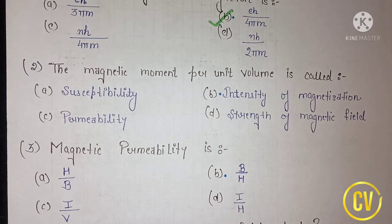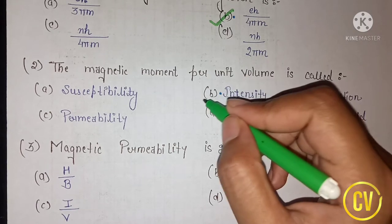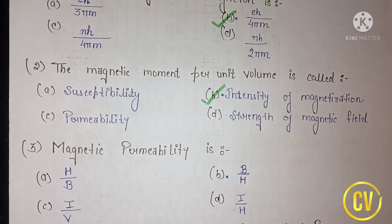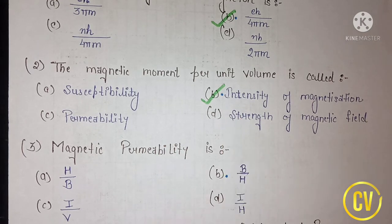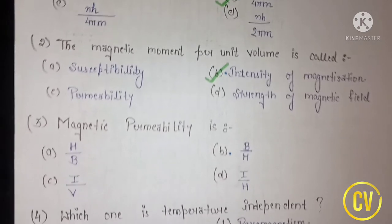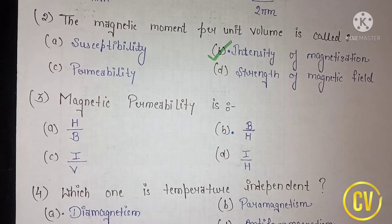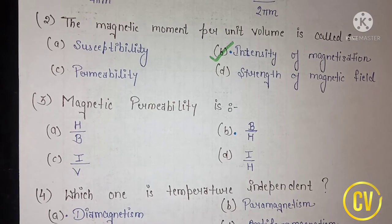The next question is: the magnetic moment per unit volume is called what? The answer is intensity of magnetization. So the correct option will be option B.